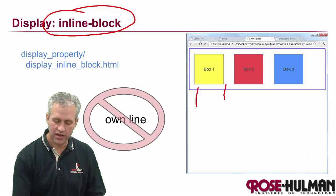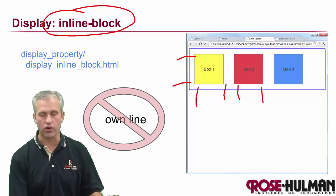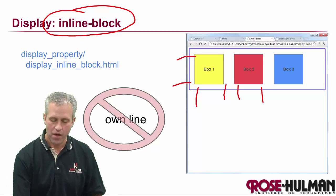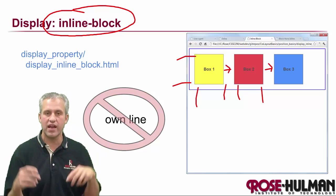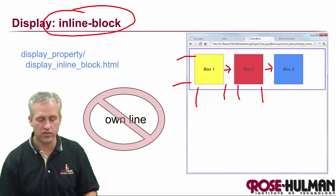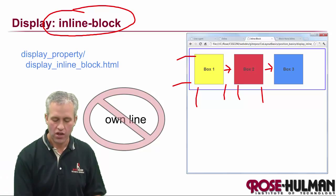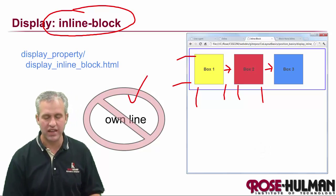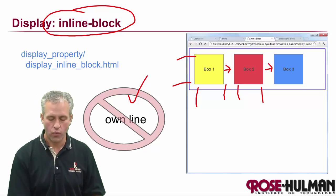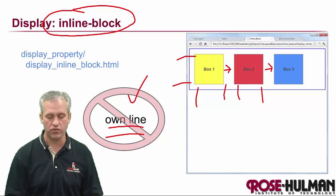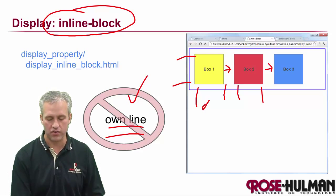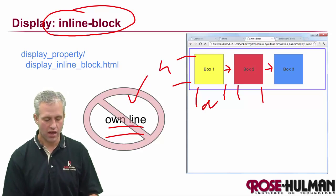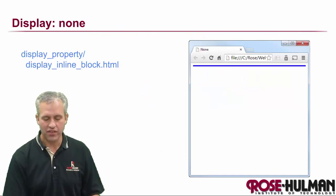One of the newer features — not something that's been around for decades — is a happy mix of the two called inline-block. People wanted to preserve width and height like block, but also flow with text like inline and share a line. Inline-block does exactly that: it flows with everything else but still respects width and height.